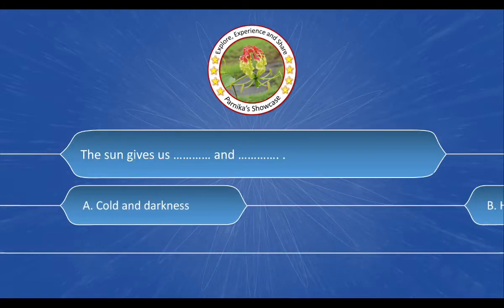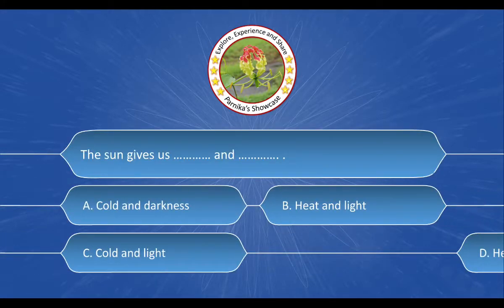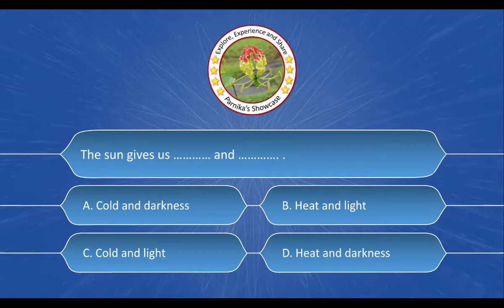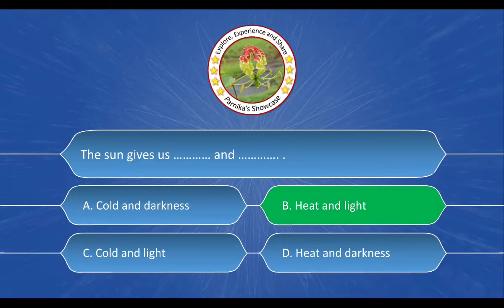Next question: The Sun gives us ___ and ___. And the options are: A. Cold and darkness, B. Heat and light, C. Cold and light, D. Heat and darkness. And the correct answer is option B. Heat and light.